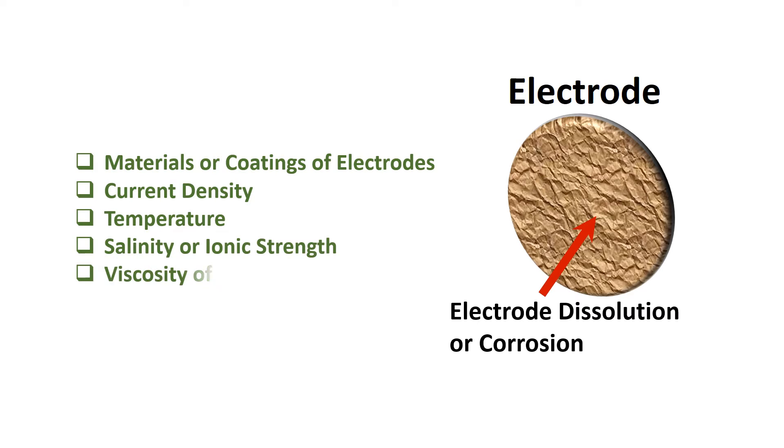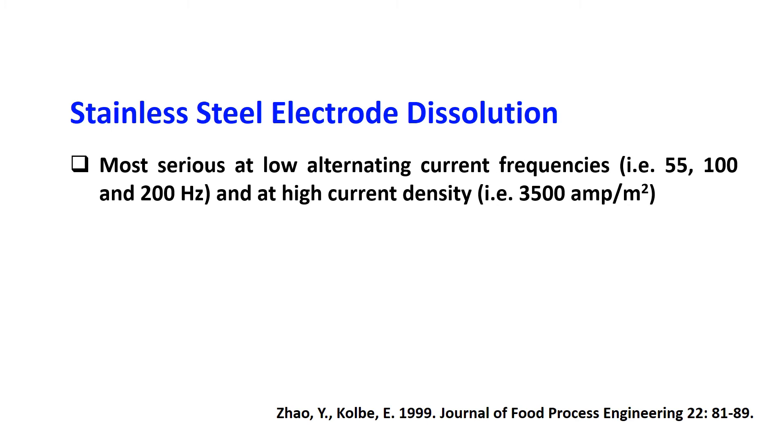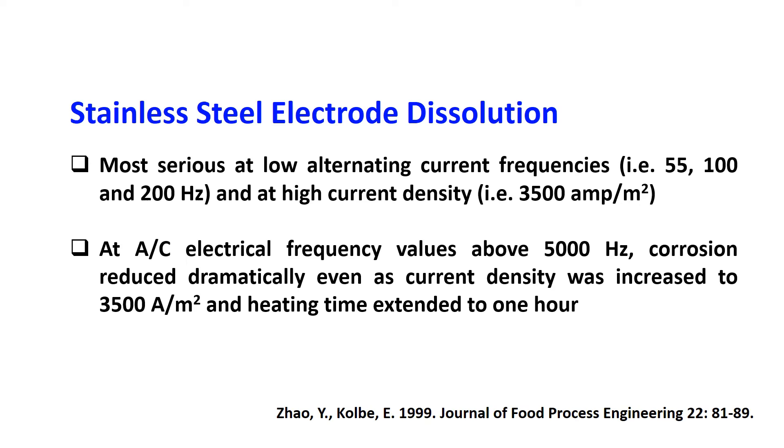In the case of stainless steel electrodes, corrosion was most serious at low alternating current frequencies of 55, 100, and 200 hertz, and at high current density of 3500 amps per meter squared. At electric frequency values above 5000 hertz, corrosion reduced dramatically even as current density was increased to 3500 amps per meter squared and heating time extended to one hour.